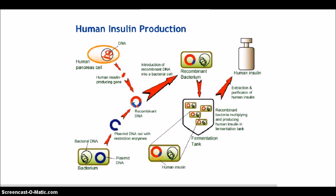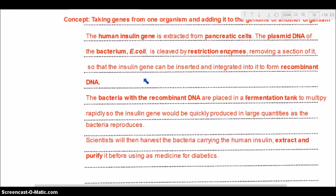Once that occurs, the recombinant DNA is placed back into the bacterial cell — now a recombinant bacterium combining human insulin genes with bacterial genes. This bacteria is placed in the fermentation tank where multiplication occurs rapidly. The more bacteria produced, the more human insulin is produced. The insulin is then extracted and purified before use as medicine for diabetics — that is the overview of how human insulin is produced using genetic engineering.